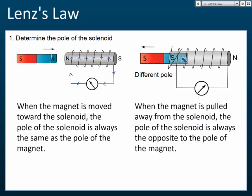What if the north pole is already inside and we pull it out? When you pull it out, a current will again be produced to oppose the motion. To oppose the withdrawal, it will produce a south pole here — because south pole and north pole attract each other, pulling the magnet back to resist the motion. So when you push in, it produces the same pole to repel; when you pull out, it produces a south pole to pull you back.